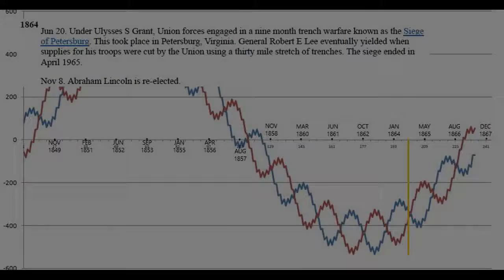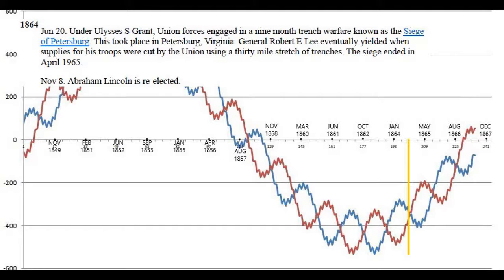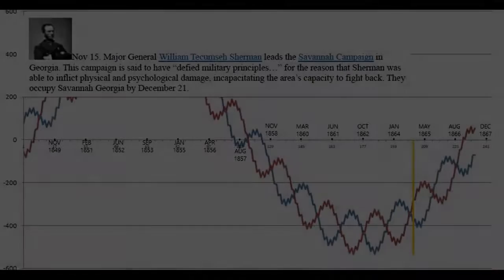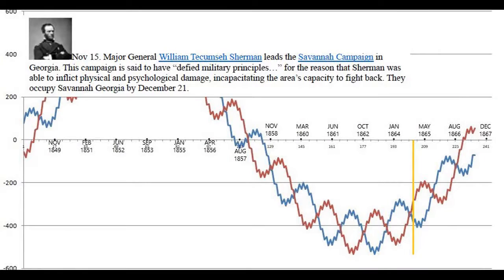From June 20th, 1864, under Ulysses Grant, Union forces engage in a nine-month trench warfare known as the Siege of Petersburg in Petersburg, Virginia. General Lee eventually yielded when supplies were cut using a 30-mile stretch of trenches — the siege ended in April 1865. On November 8th, Abraham Lincoln is re-elected. On November 15th, Major General William Tecumseh Sherman leads the Savannah Campaign in Georgia, inflicting physical and psychological damage, occupying Savannah by December 21st.